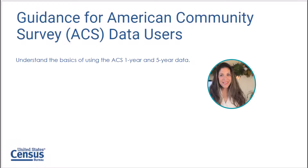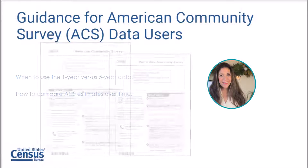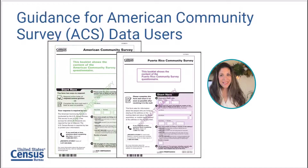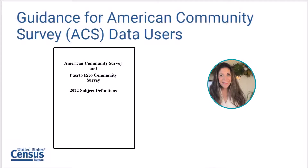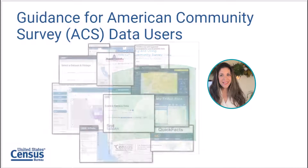Today's lesson will help you understand the basics of using the ACS one-year and five-year data. Data seekers often have more complex questions about when to use the one-year versus the five-year data, how to compare ACS estimates over time, or how to compare them with decennial census data. We will address those questions and introduce resources such as sample ACS questionnaires, subject definitions, handbooks, and important information webpages. We will also quickly introduce you to a variety of data tools.